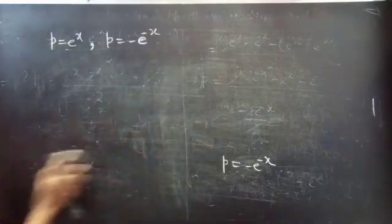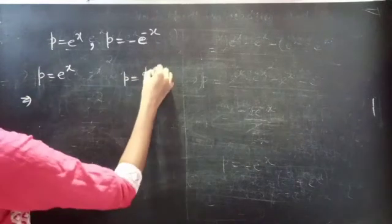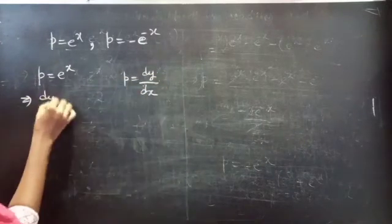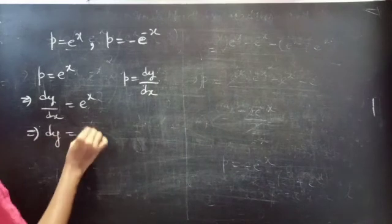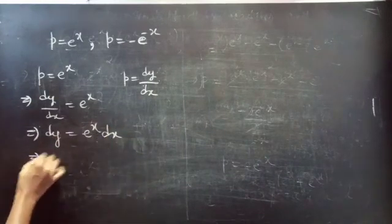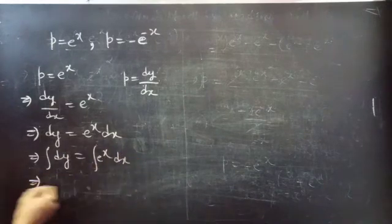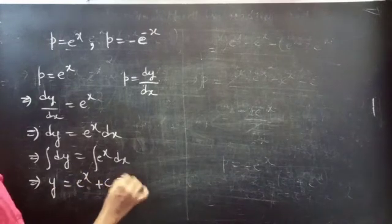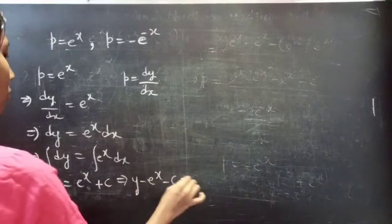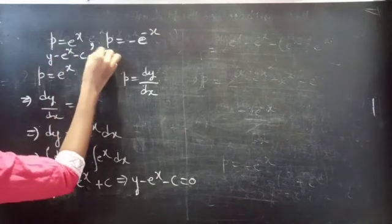Now let's find the solution for the first equation. Consider P equals eˣ. Putting P equals dy/dx, we get dy/dx equals eˣ, so dy equals eˣ dx. Integrating both sides: integral of dy equals integral of eˣ dx. Then y equals eˣ plus c, which gives y minus eˣ minus c equals 0 as the solution to this equation.